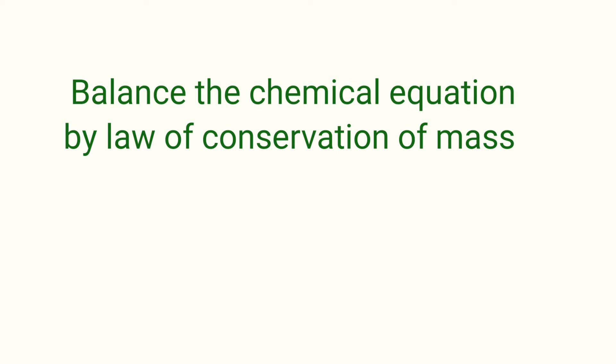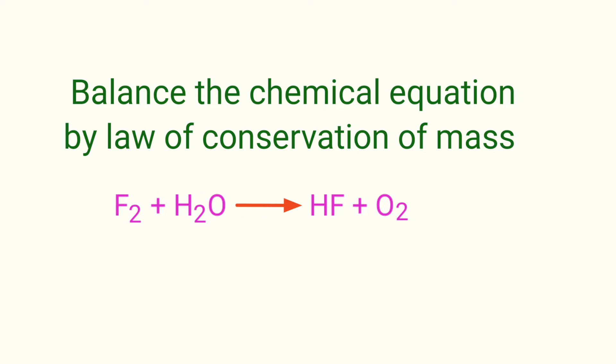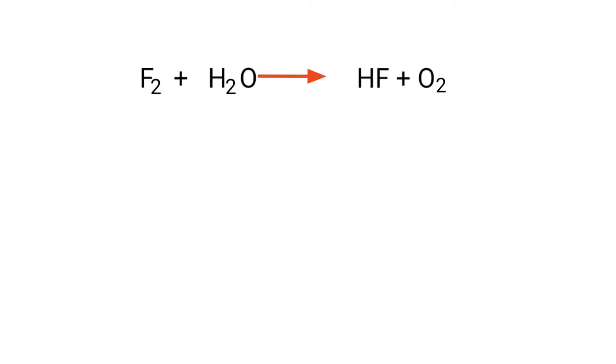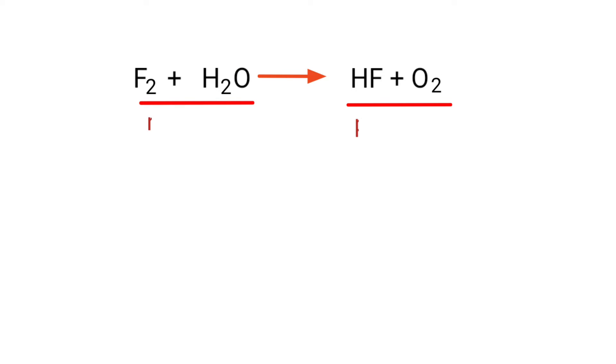Balance the chemical equation by the law of conservation of mass. Fluorine plus water gives us hydrogen fluoride plus oxygen. In this equation, the reactants are fluorine and water, and the products are hydrogen fluoride and oxygen.